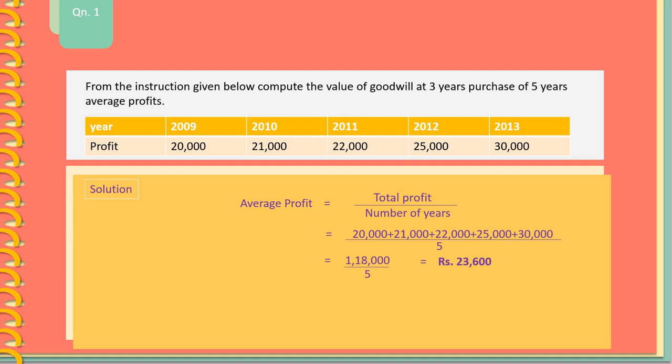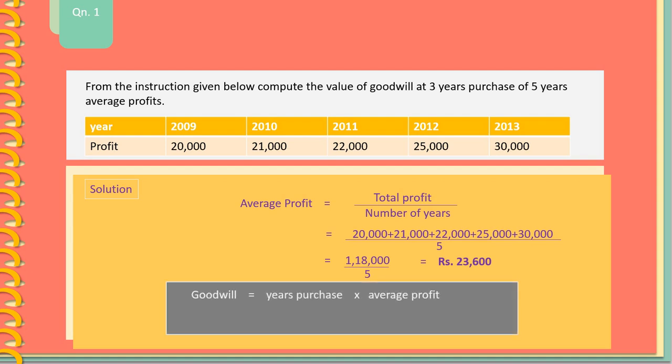Step 2: Goodwill is equal to years of purchase multiplied by average profit. That is 3 multiplied by 23,600. Therefore, goodwill is equal to Rs. 70,800.